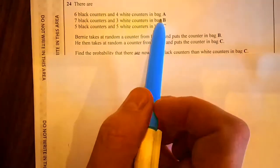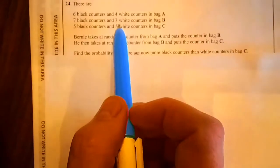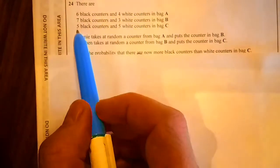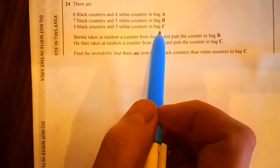6 black counters and 4 white counters in bag A. 7 black counters and 3 white counters in bag B. 5 black counters and 5 white counters in bag C.